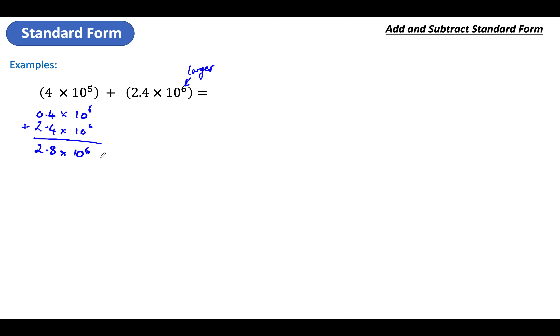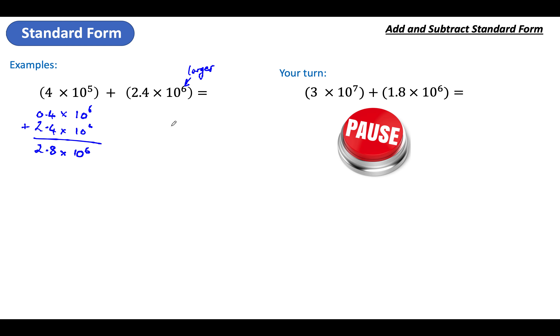Add those decimal bits together. There's a question for you — you have a go. Look for which one is the larger number, adjust it, and then add them. Pause and unpause when you're done.